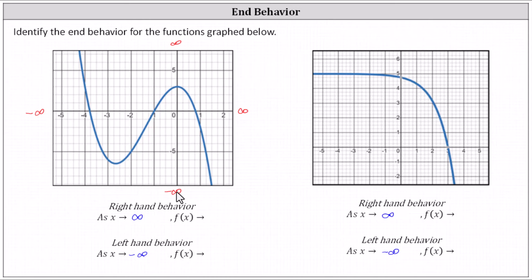Now let's determine the right-hand behavior for this first function. As x approaches infinity, we can think of moving to the right along the function. As we move right, notice the graph goes down indefinitely, which indicates the y values decrease without bound and approach negative infinity. The right-hand behavior is: as x approaches infinity, f of x approaches negative infinity.